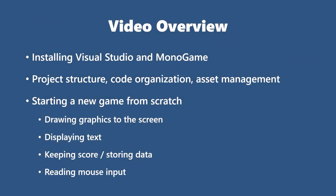First, we'll need to get Visual Studio installed, and then grab the latest version of MonoGame. I'll then show you how to create new projects, how the code is organized, and how to manage your game assets using the pipeline tool. And finally, we'll start the process of creating our own original game, which will utilize several key aspects of game development, like drawing graphics to the screen, displaying text, keeping score, storing data and variables, and reading mouse input from the player.